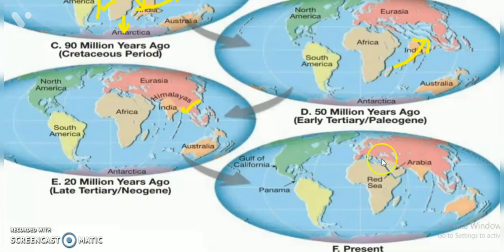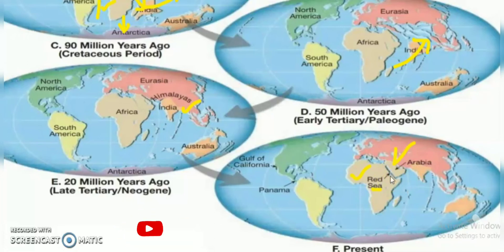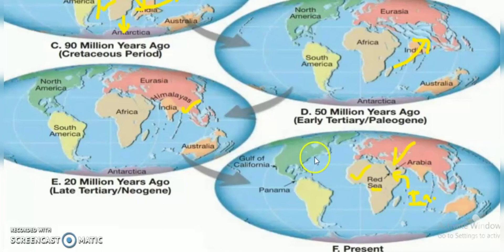Now I am going to show you the Red Sea. The Red Sea is located between Asia and Africa. We can also see the Indian Ocean here. Arabia, which is part of Western Asia, is also visible in this region.